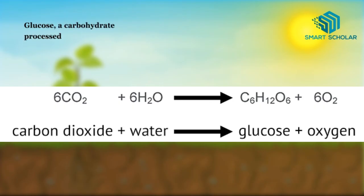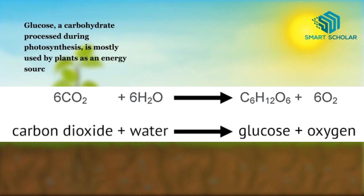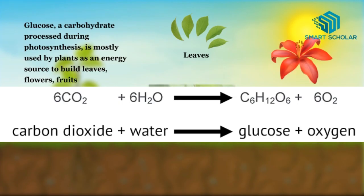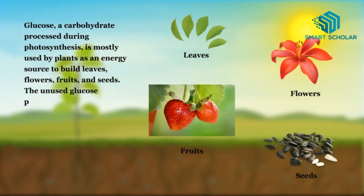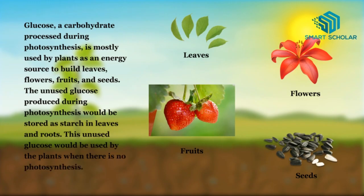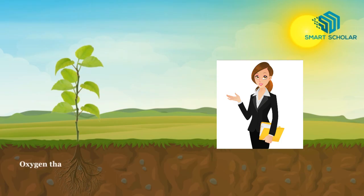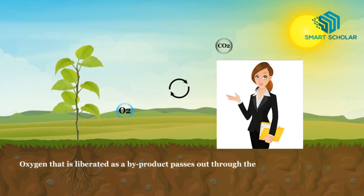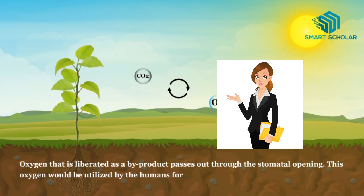Glucose, a carbohydrate processed during Photosynthesis, is mostly used by plants as an energy source to build leaves, flowers, fruits, and seeds. The unused glucose produced during Photosynthesis would be stored as starch in leaves and roots. This unused glucose would be used by plants when there is no Photosynthesis. Oxygen that is liberated as a by-product passes through the stomatal opening, and this oxygen would be utilized by humans for respiration.